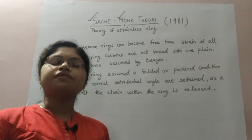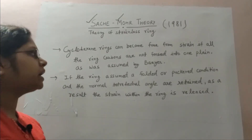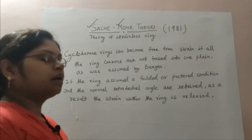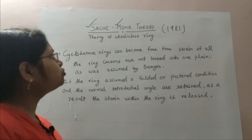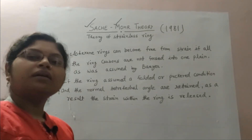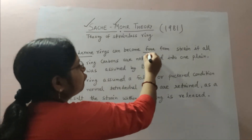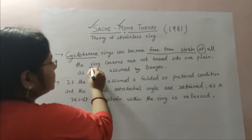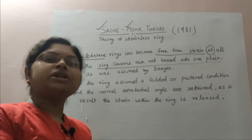In order to account for the stability of cyclohexanes, Sachse and Mohr proposed a theory that cyclohexane rings become free from strain if all the ring carbons are not forced into one plane. Baeyer had considered that all the carbons will be present in the same plane, but according to Sachse-Mohr theory, if all the carbons are not forced into the same plane, then the ring is free from strain. If we draw the structure of cyclohexane, it exists in two conformations — the chair form and the boat form.